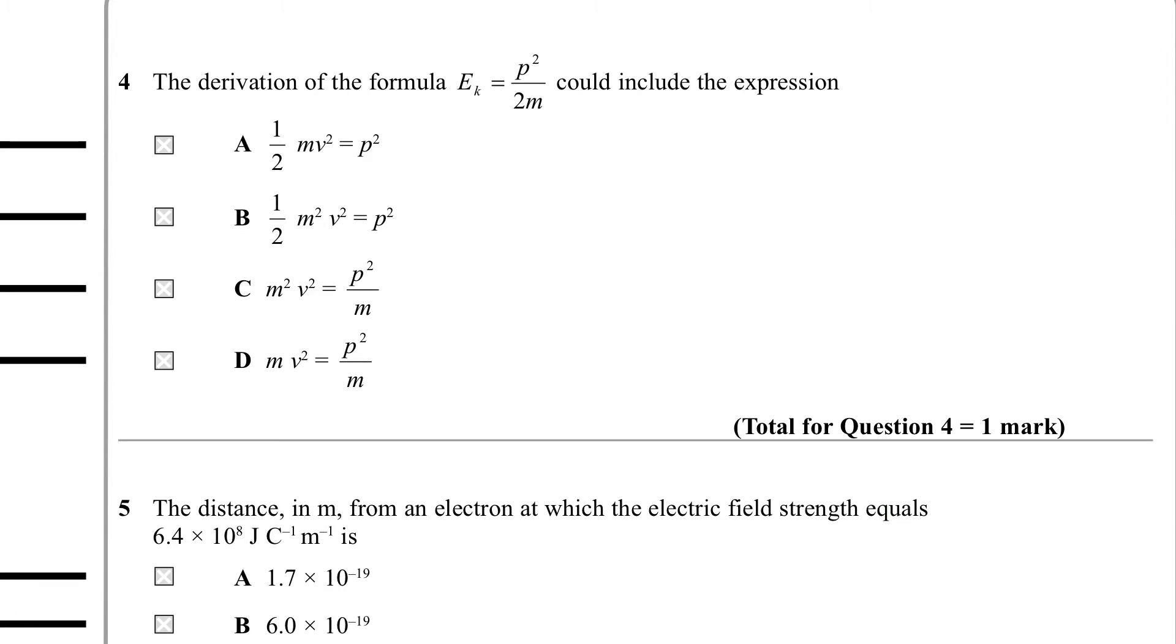Question 4. The derivation of the formula E_k is p squared over 2m could include the following expression. So one of these expressions is appropriate for developing the relationship that kinetic energy is p squared over 2m. So we just take these in turn. A half mv squared equals p squared - the units don't match. p squared would be the same as m squared v squared. p squared equals a half m squared v squared. The units would match but I'm not sure where that's coming from. The half is turned up there for no real obvious reason.